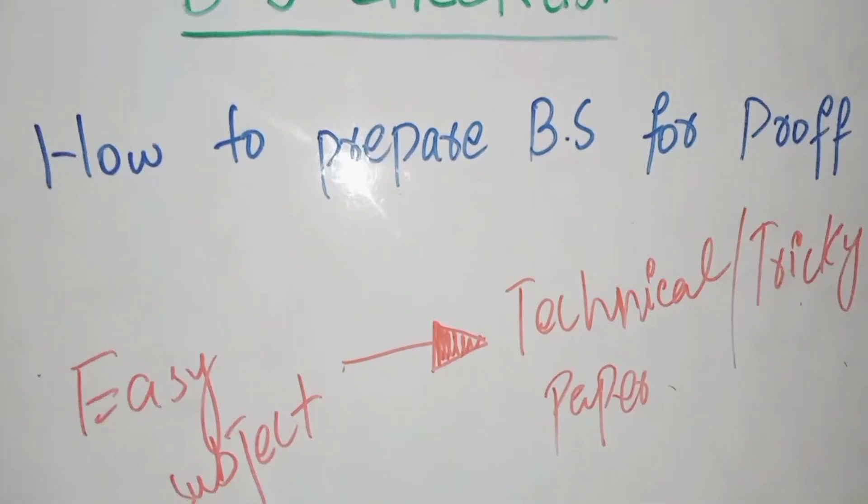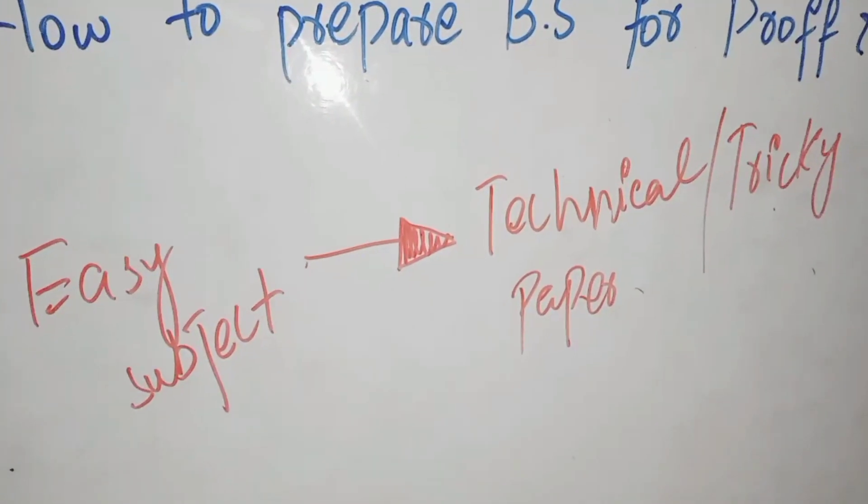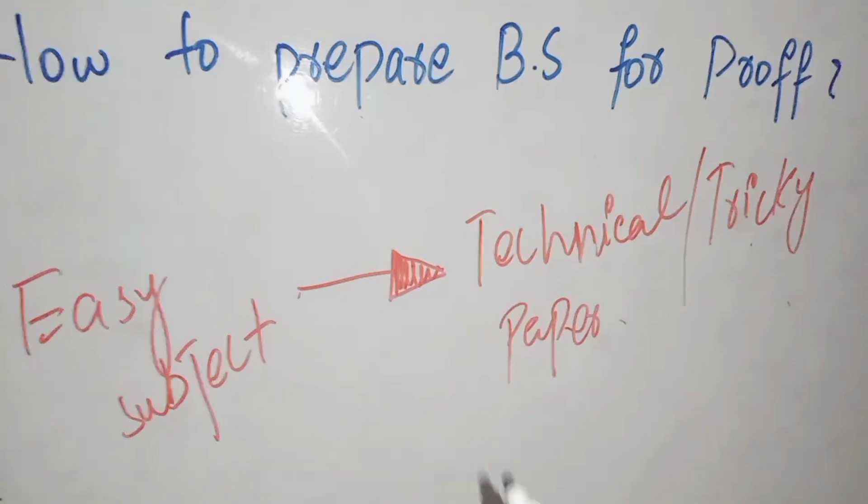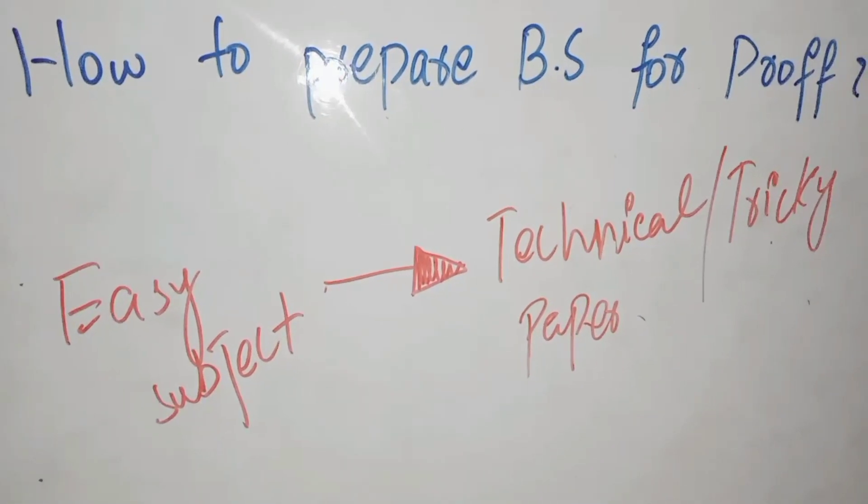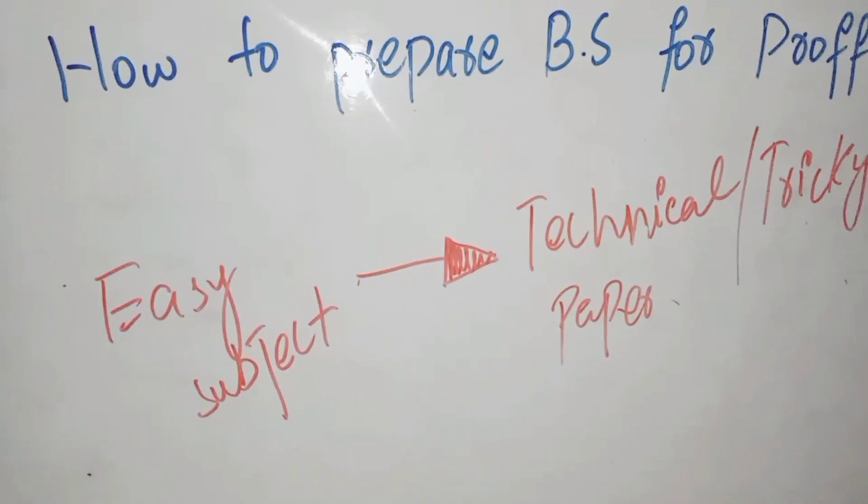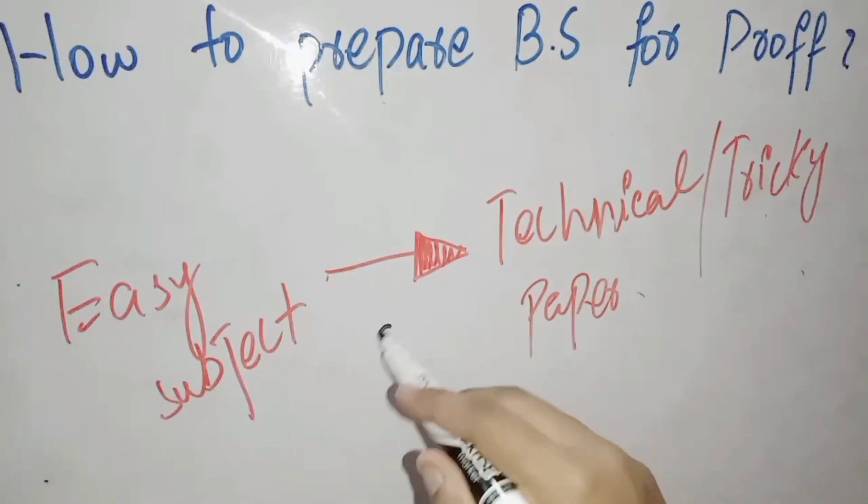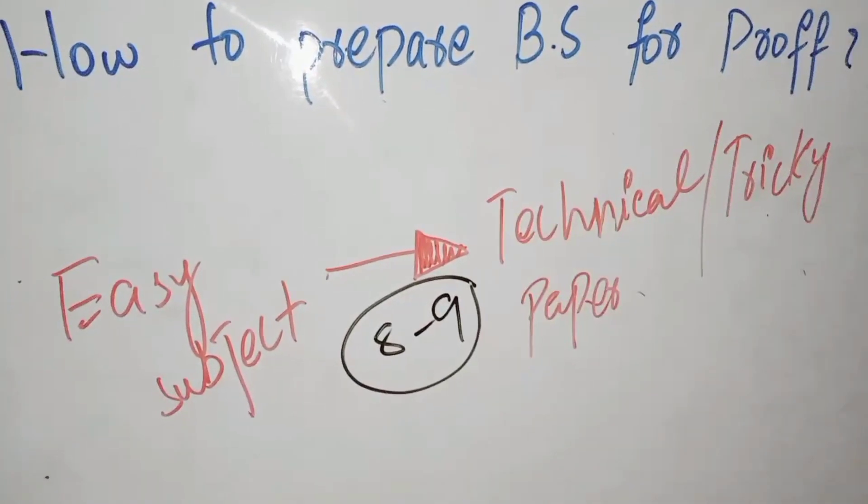This is one rule: the subject is very easy, but the paper is very technical and very tricky. I told you about 8-9 lines. It is very easy to ask questions, and a person gets tired from 8-9 lines.